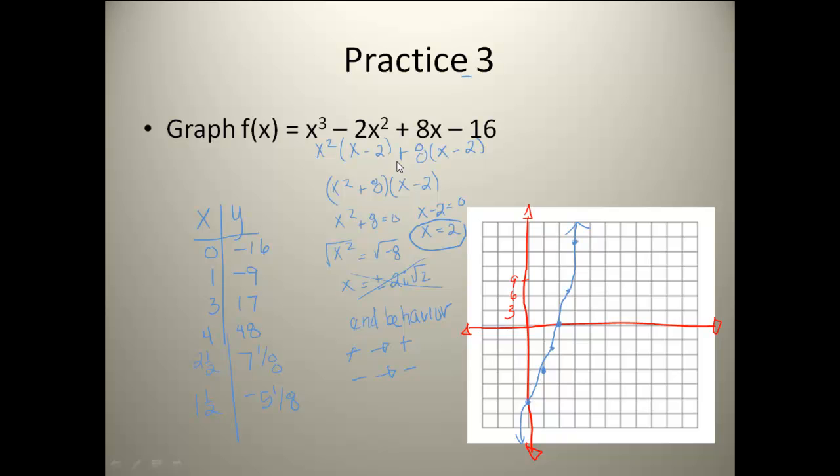Okay, on this one, I went ahead and I grouped it first. Found out that I had a zero at two and then I had a zero at an imaginary zero. So, those don't get graphed because I'm graphing on a real plane. So those imaginary zeros, we don't put on our x-axis anywhere because they don't exist on the real axis. We would have to do an imaginary graph for that.